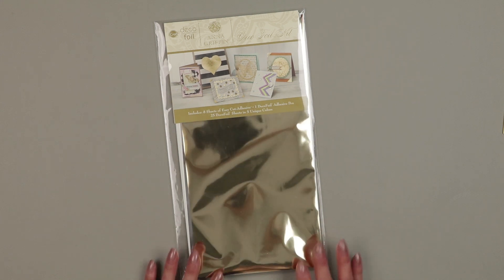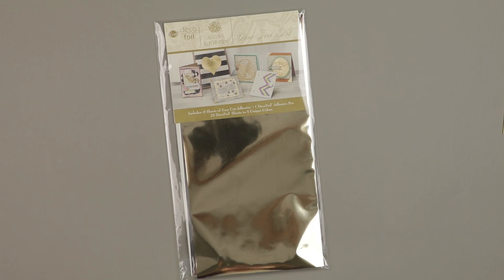I purchased this kit on HSN for $19.95 and you get five 6x12 foil transfer sheets in green, copper, red, silver and champagne.